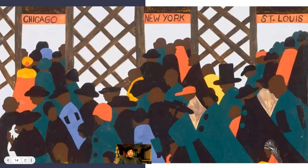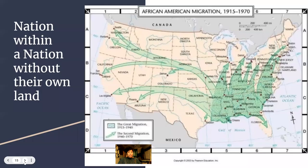This is one of his paintings — you can see some of the places that Black people were going at the time: Chicago, New York, and St. Louis — urban cities. You could think of Black America as a nation within a nation without its own land. Native Americans have reservations, but Black Americans never had land officially recognized by the United States of America as their own.